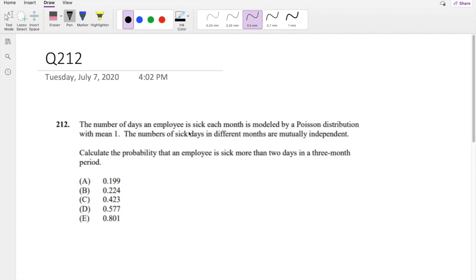So basically, an employee is sick each month with a Poisson distribution with mean 1. So for 1 month, the mean is equal to 1. And the number of sick days between different months are mutually independent.